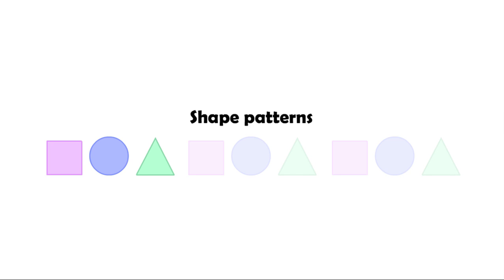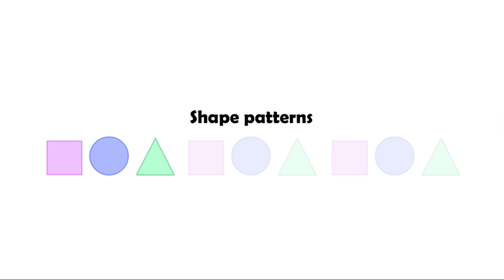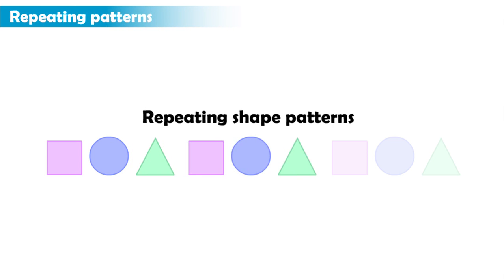For example, this shape pattern has a square, then a circle, followed by a triangle, and the shapes keep repeating over and over again in the same order.